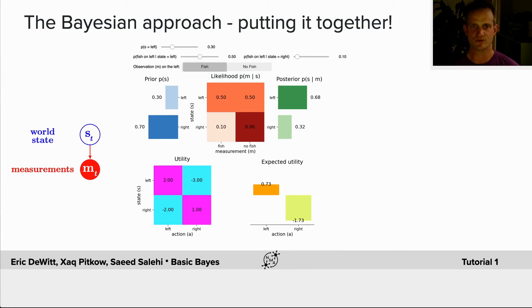We've created this nice widget for you to explore this entire space. You can see the prior, the likelihood, the posterior, the utility function and the expected utility.